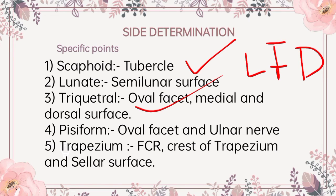Moving further to triquetral. The oval facet for the pisiform lies on the distal part of the palmar surface. The medial and dorsal surface are continuous and non-articular. Moving further to pisiform: the oval facet for the triquetral lies on the proximal part of the dorsal surface. The lateral surface is grooved by the ulnar nerve.